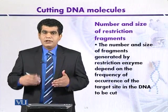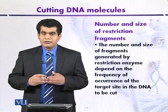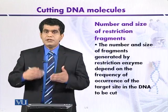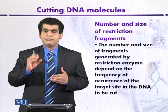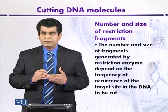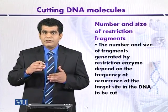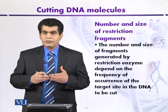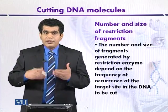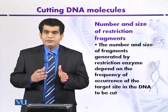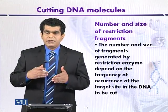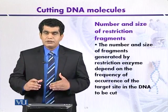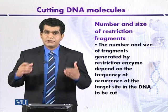What will be the length of different fragments produced by restriction endonucleases? It will depend upon the frequency of occurrence of the particular target sequence, and it will also be determined by the GC content of an organism. If we suppose that the GC content is 50%, then we can assume this is the particular length of fragments generated by digestion with a particular restriction enzyme.